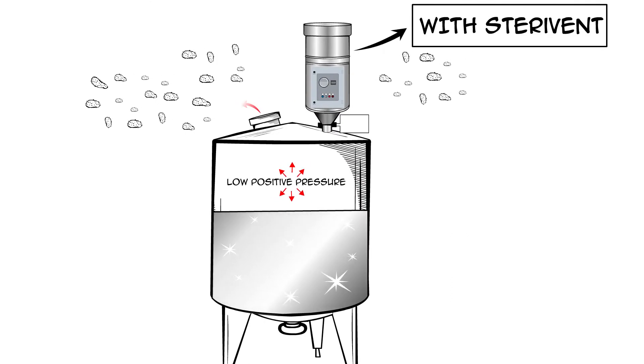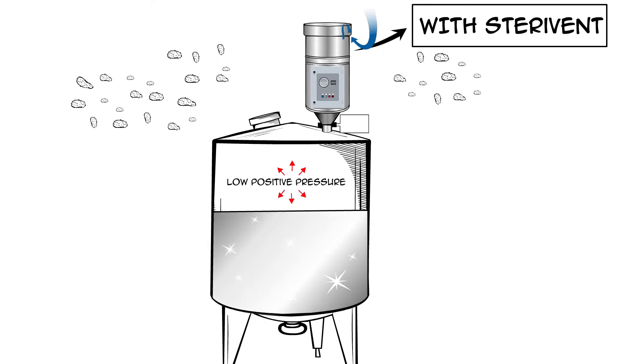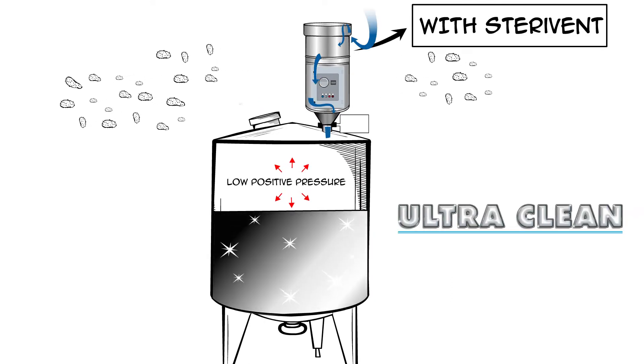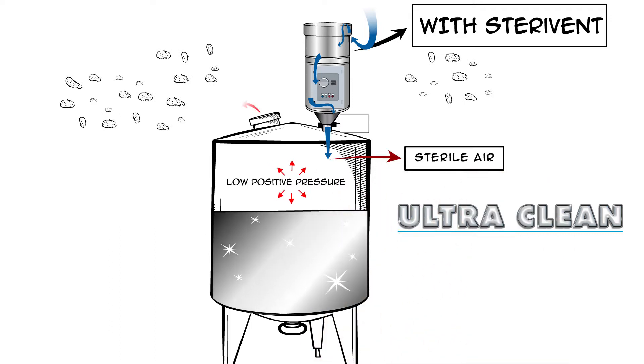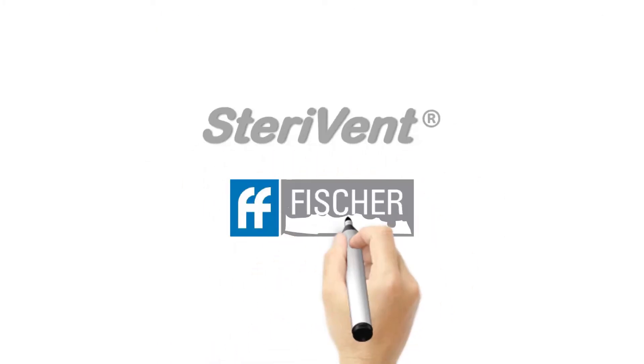The best way to produce healthier products is to create an ultra-clean and sterile atmosphere in your production tanks. And with the SteriVent system, you can.